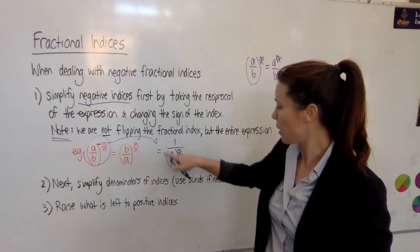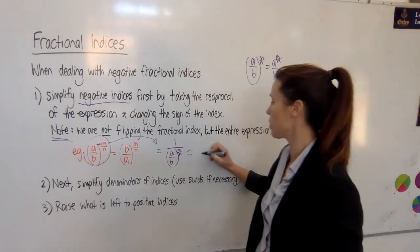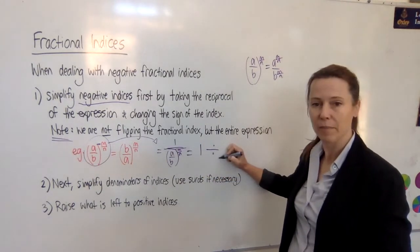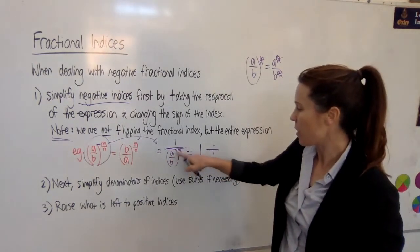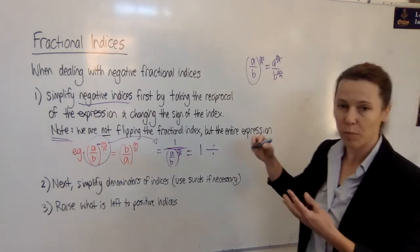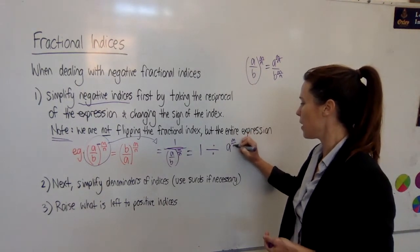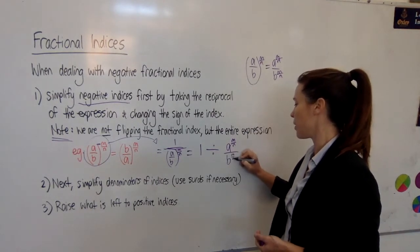Okay, now if we've done one divided by that, what we've really got is one divided by—I've just written this as a great big divide by sign—and now I can rewrite this expression as I've written it up here, just splitting it up to show you what happens. We've got a to the power of m over n over b to the power of m over n.